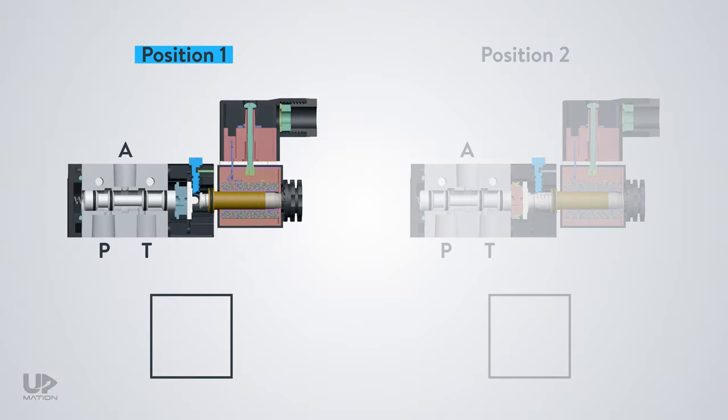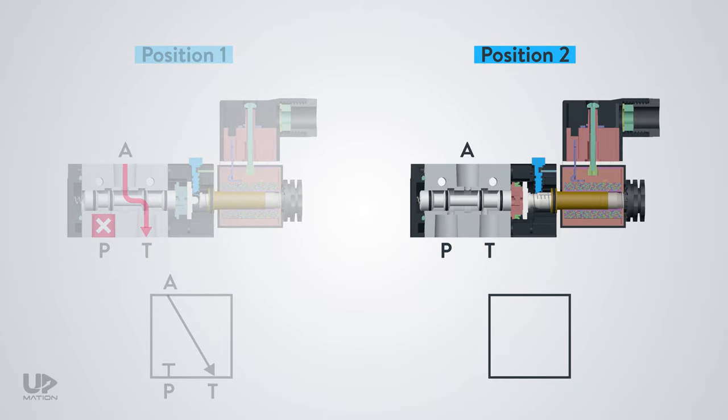In the first or the normal position of the spool, the fluid path is like this. Port P is blocked, and the service port A is connected to the tank port T. So, inside the relevant square, I'll draw a horizontal line in front of port P to show it is blocked, and an arrow from port A toward port T. In the second position of the spool, where the operator of the valve is actuated, the T port becomes closed, and port P becomes open, and as a result, the fluid flows toward the actuator. Inside the square, I'll put an arrow from port P toward port A. And this time, I put a block sign for port T.